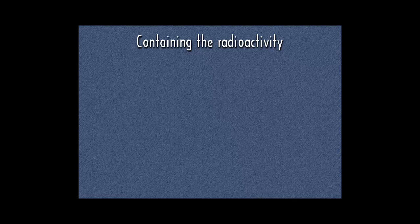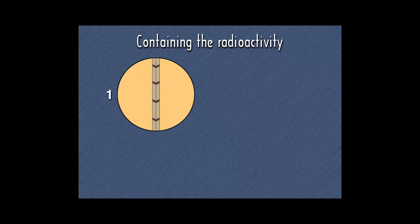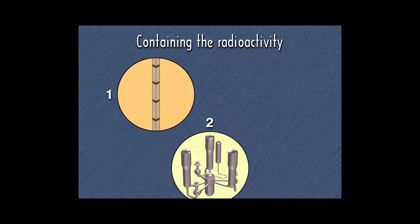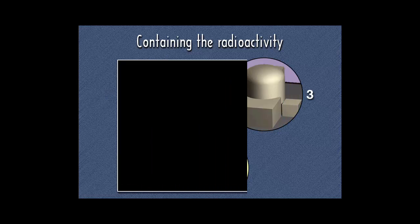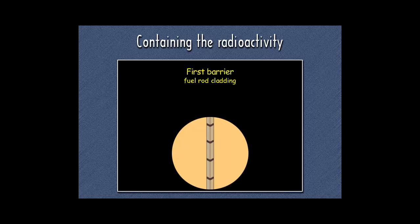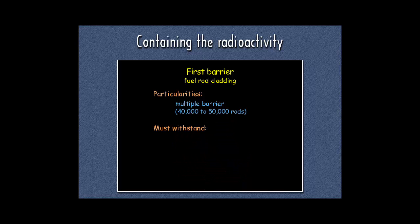Containment of radioactivity depends on the integrity of three successive walls between the fission products and the environment. The first barrier is the cladding of the fuel rods; the second is the pressure boundary of the reactor coolant system; the third is the containment vessel. The fuel rod cladding is in direct contact with the radioactive material — this is a multiple barrier, with between 40,000 and 50,000 rods depending on power rating.